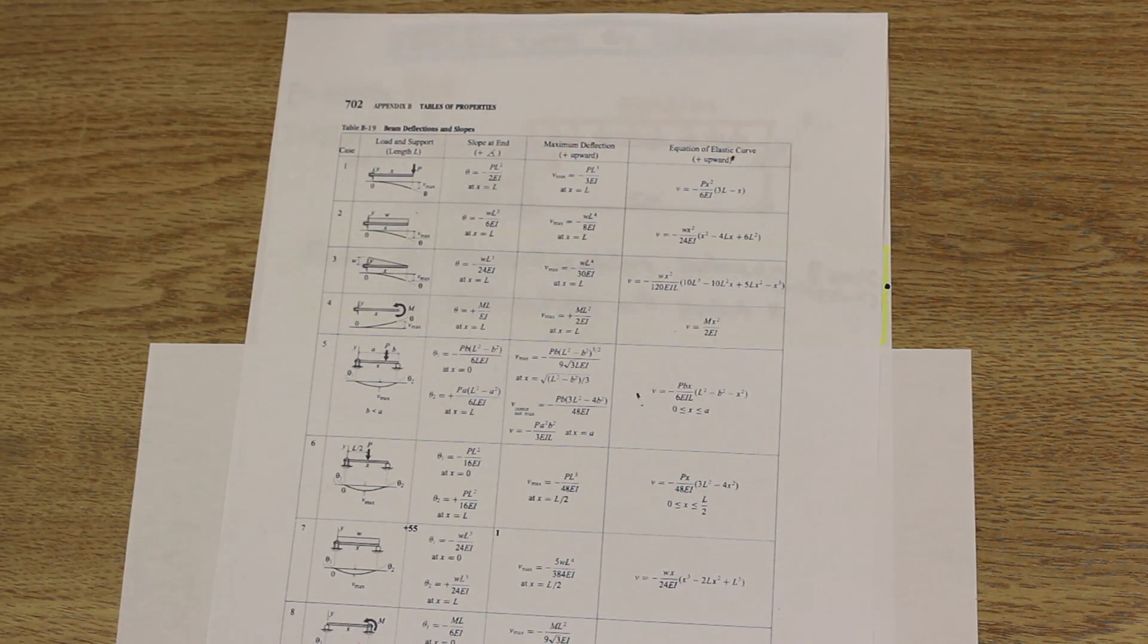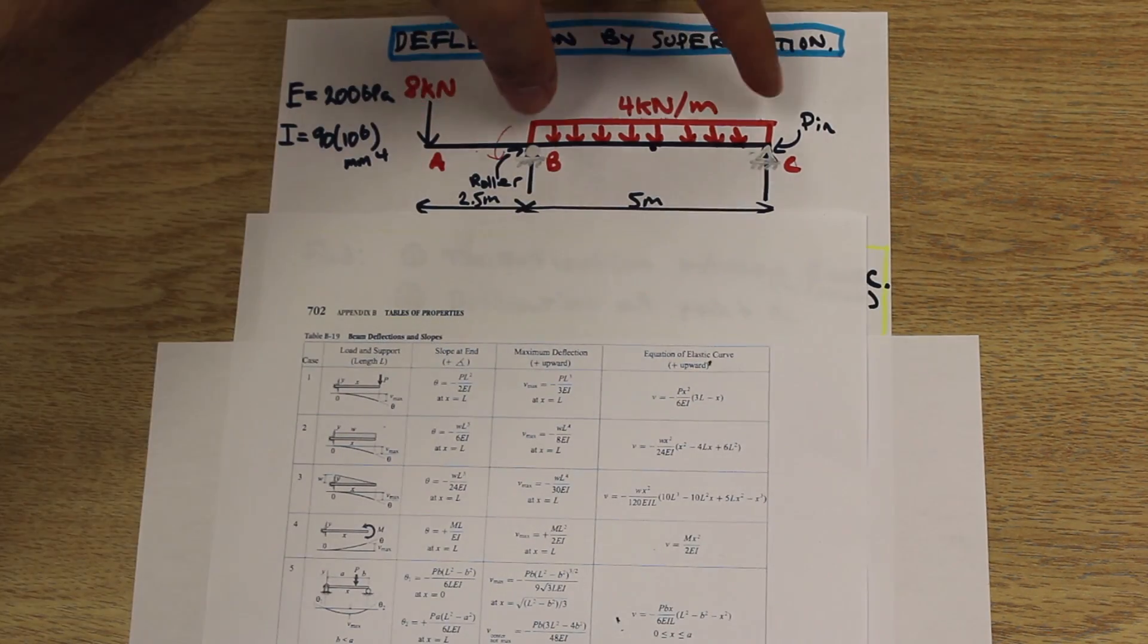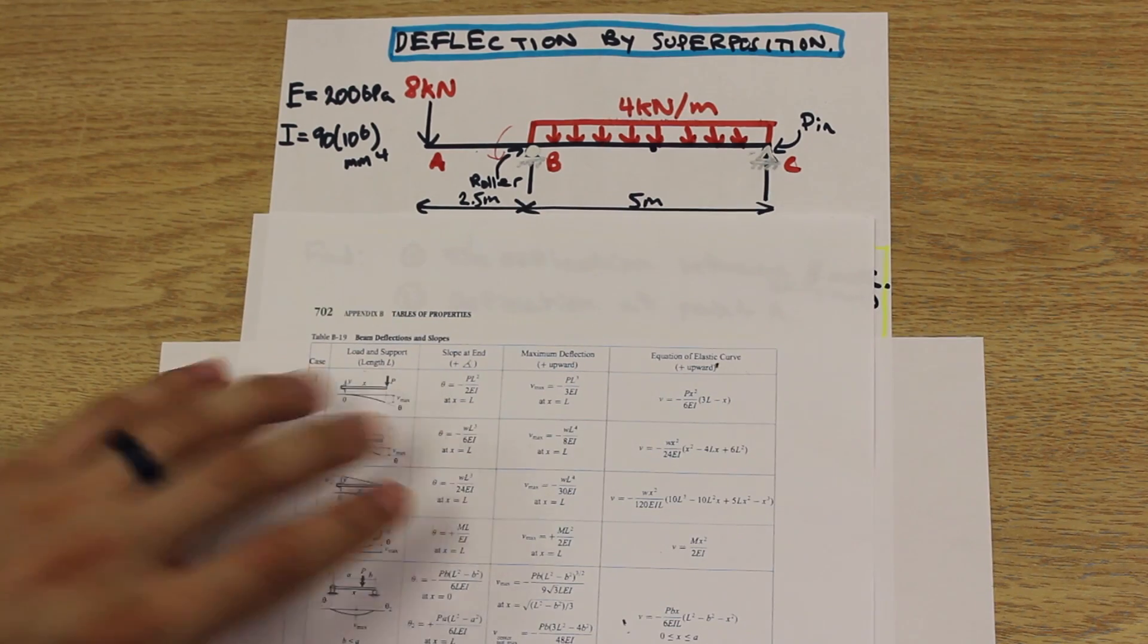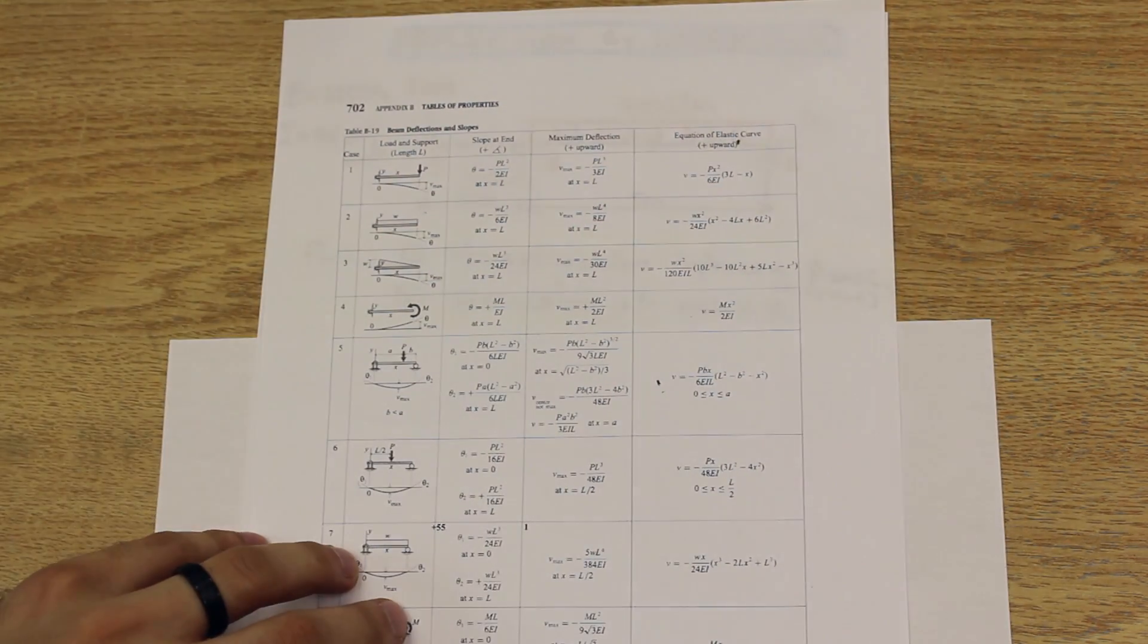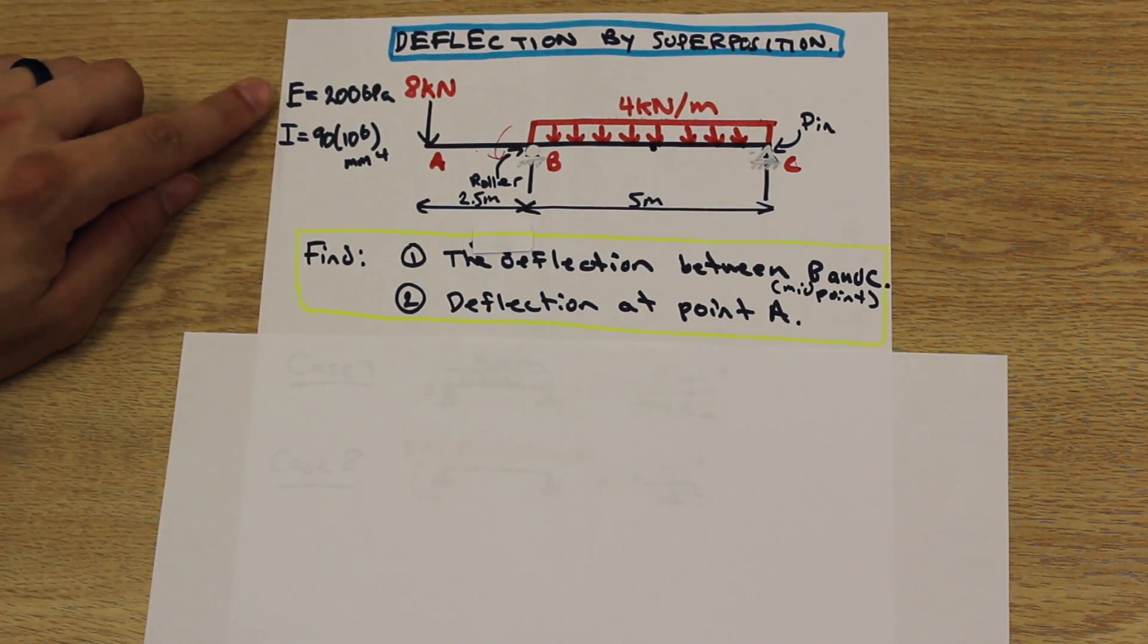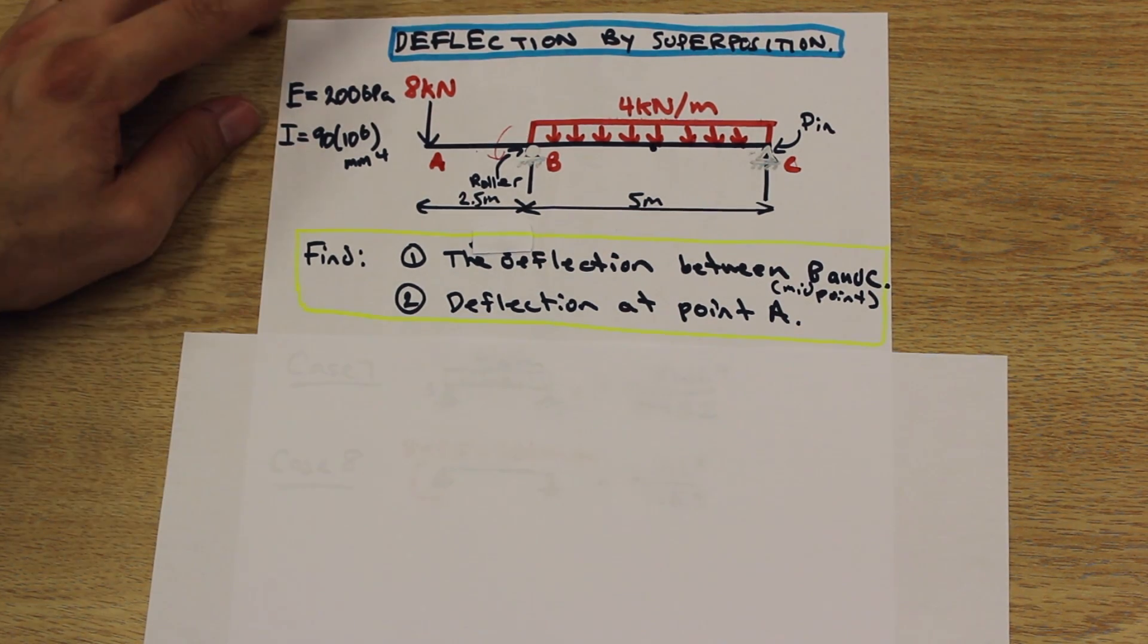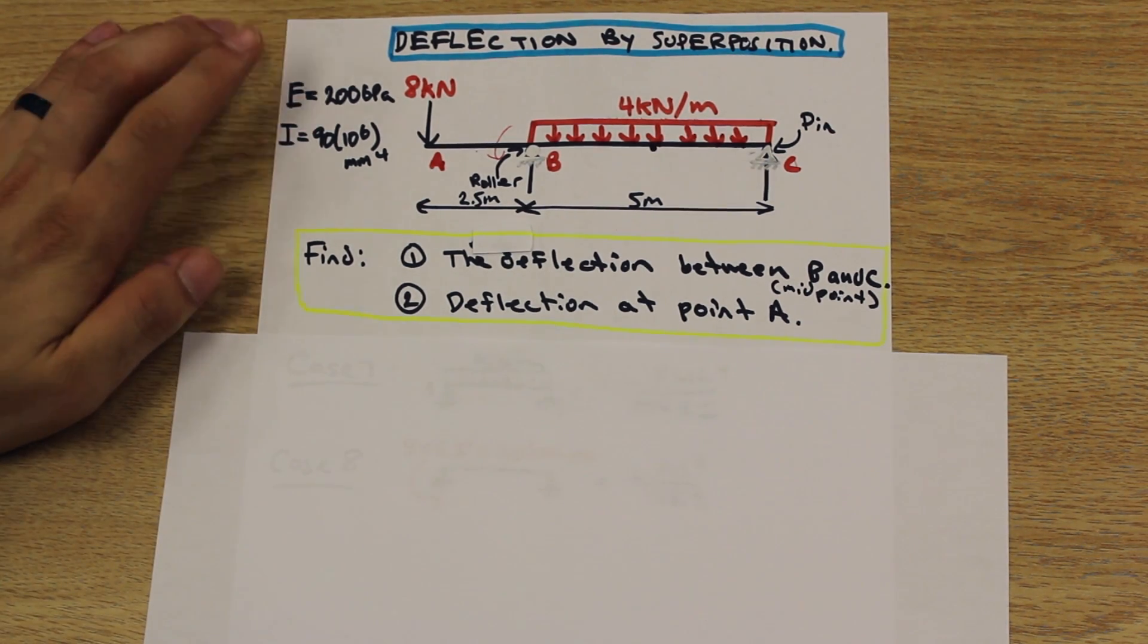So there's the table. And what we're going to do with this table is we're going to break up our beam, our original beam here, into different sections according to the external loads, and we're going to choose cases from this table and apply them to the beam to find the deflection.